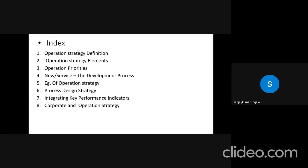First is definition of strategy. Second one is the element of strategies. Third is the operation priorities. Fourth, new services, the development process. There is an example on strategy, process design strategy, integrating key performance integrators, corporate and operation strategies.